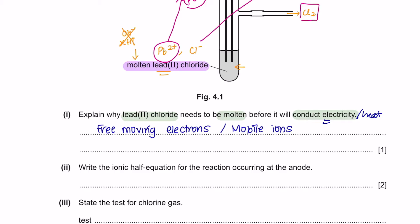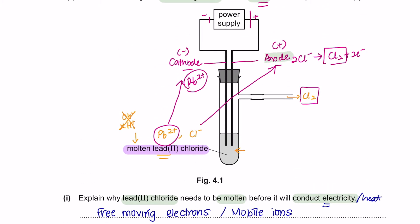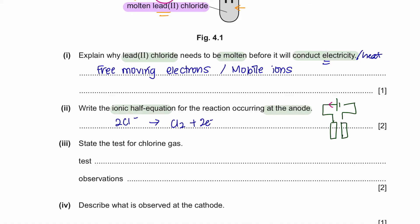Next, part 2. Write down the ionic half equation for the reaction occurring at anode. So at anode, the chloride ion is attracted and it will form chlorine gas and two electrons. Electrons will flow from positive terminal like this to the negative terminal. As you can see, this is anode since it is connected to the negative terminal. At anode here, you can see electrons leaving. That's why you have electrons here after the arrow.